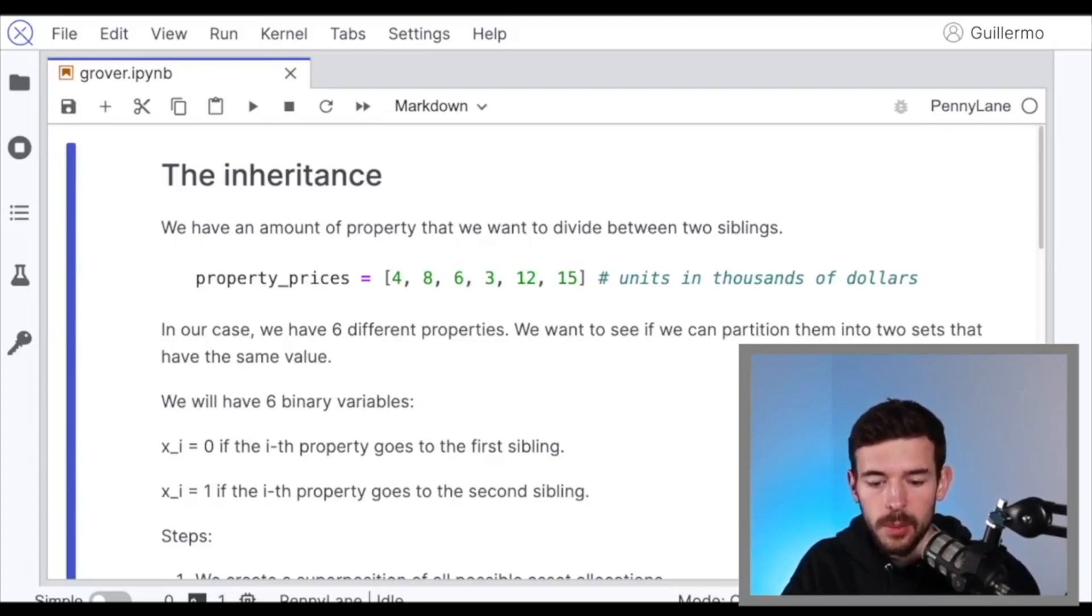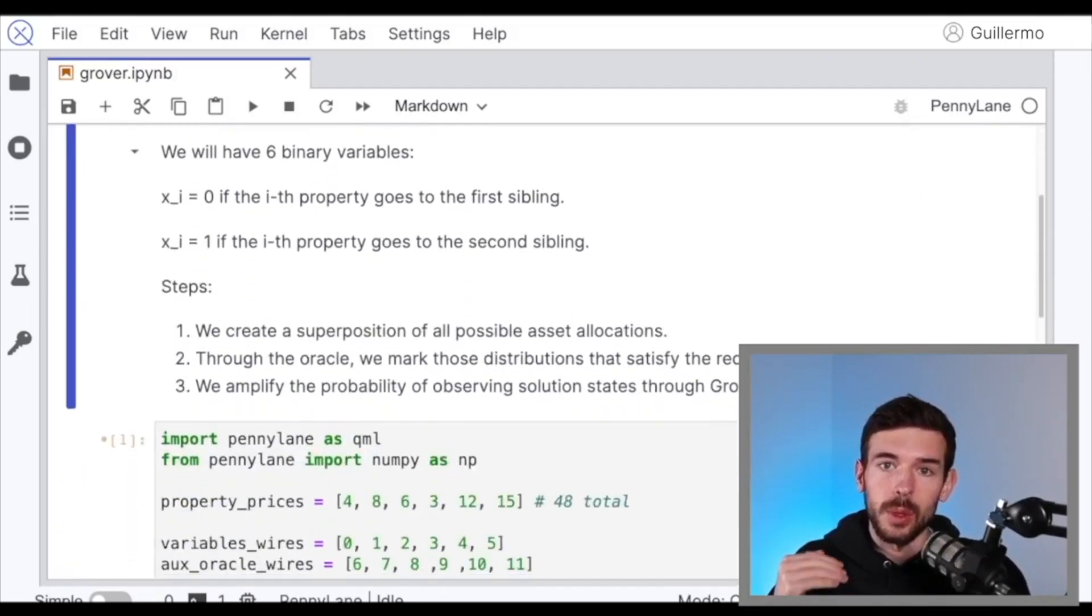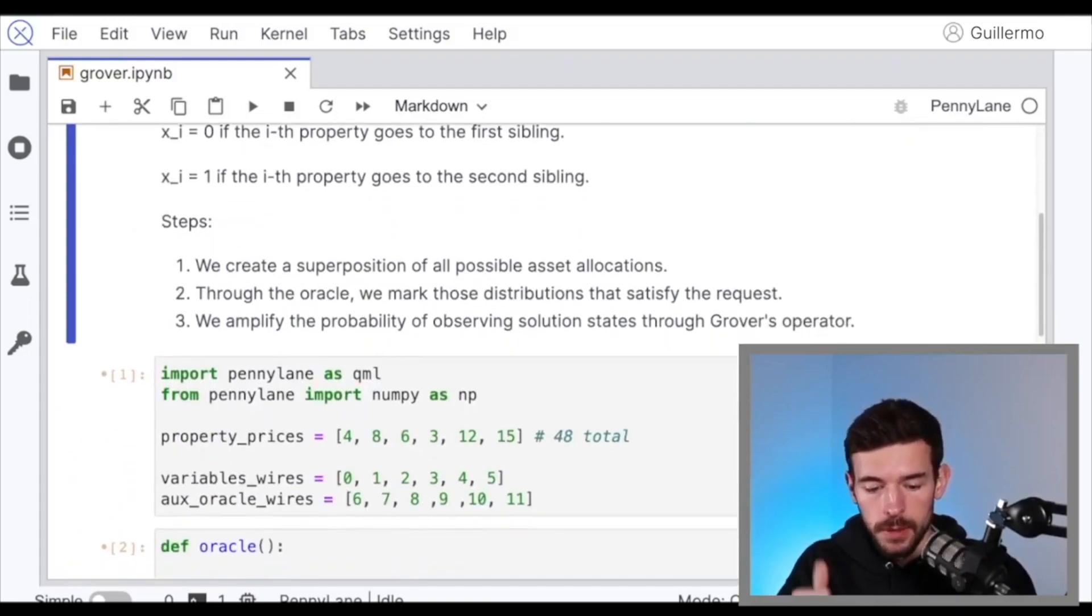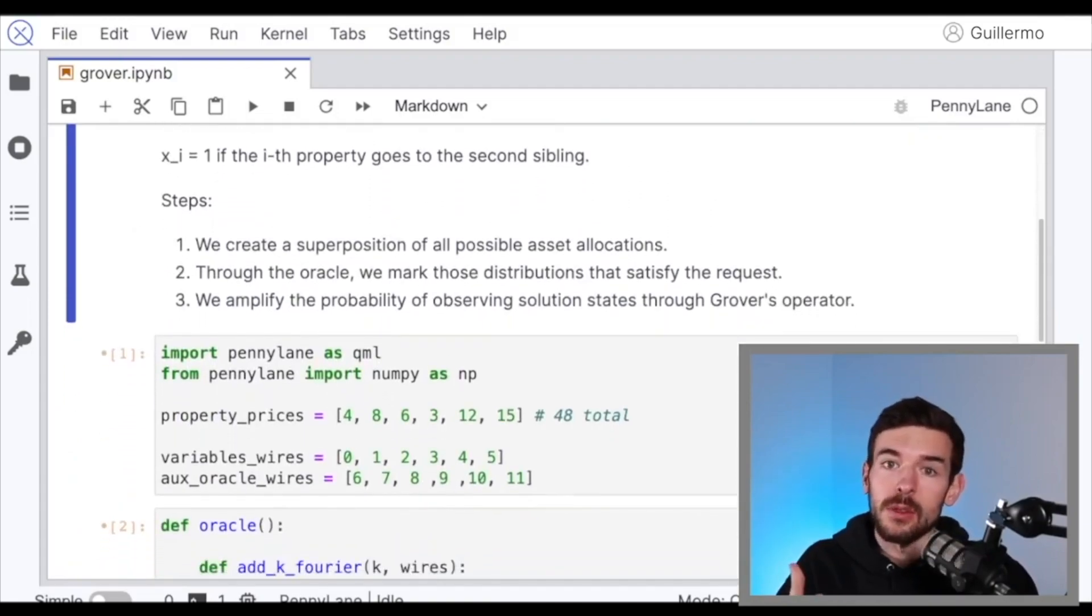Okay, so here we have a little summary of what is going to be our problem, the inheritance problem. We have here the property prices, 4, 8, 6, 3, 12, and 15. We have six variables, because we have six properties, and in that case, if the variable xi equals zero, means the properties for the first sibling equal to one or the second sibling. And the steps that we're going to follow: first of all, we create the equal superposition of all the possible configurations, we apply the oracle to mark the elements that satisfy our conditions, and finally, we amplify the probability of the solution states through the Grover operator.